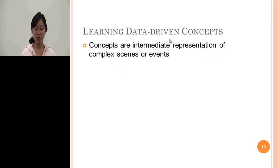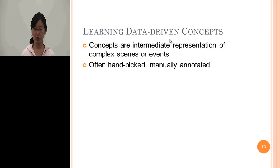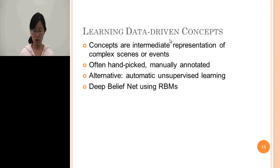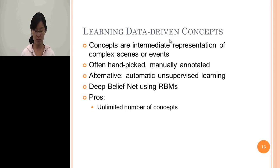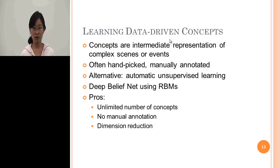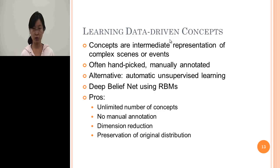Concepts are intermediate representations of complex scenes or events. The traditional way is to manually annotate data and train concept detectors. Here, we explore how to unsupervised learn data-driven concepts using deep belief nets, which are several layers of restricted Boltzmann machines. The advantage is that it is data-driven, so we can achieve an unlimited number of concepts without manual annotation, while also reducing the dimension of clip representations and preserving the original distributions.